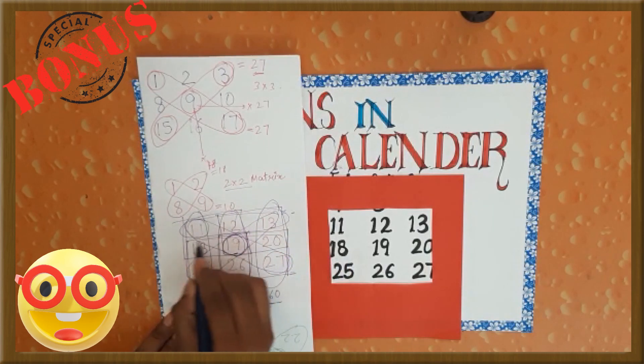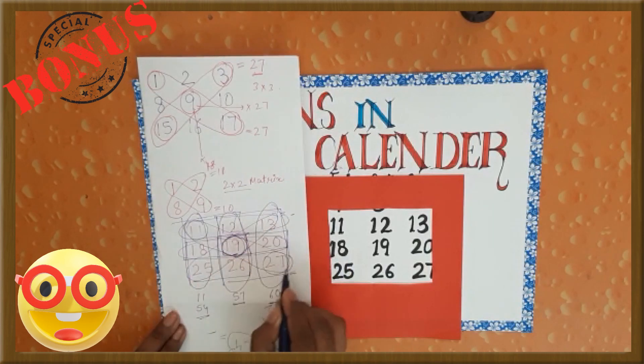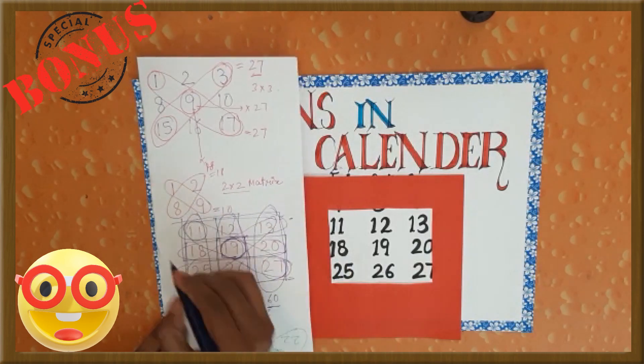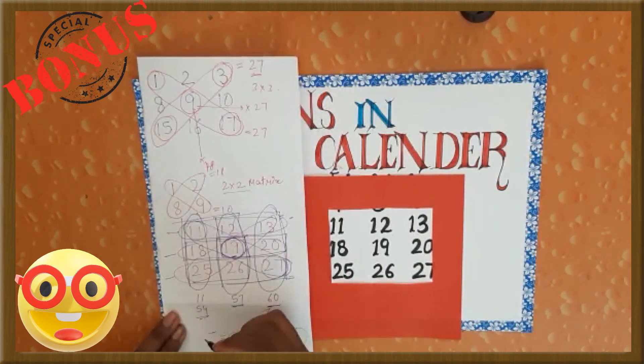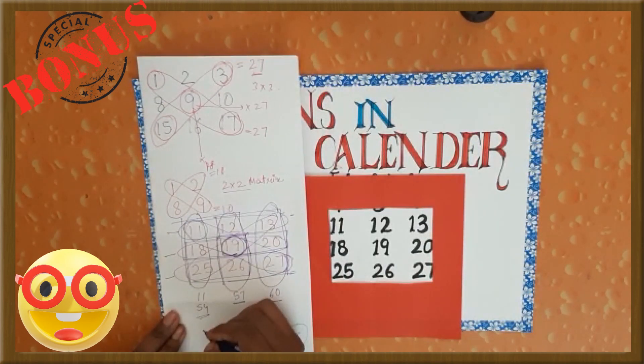Please find the sum of these three numbers, the sum of these three numbers, and the sum of these three numbers. Can you see any pattern here also? Please find it and tell me in the comment section.